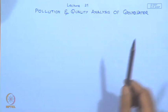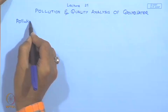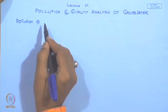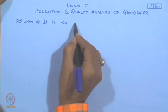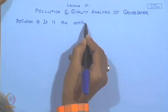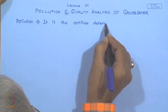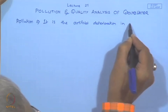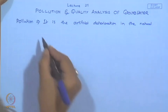Welcome to lecture 21 in the module on pollution and quality analysis of groundwater. In this lecture, we will discuss the meaning of pollution first. Pollution is the artificial deterioration in the natural groundwater quality.